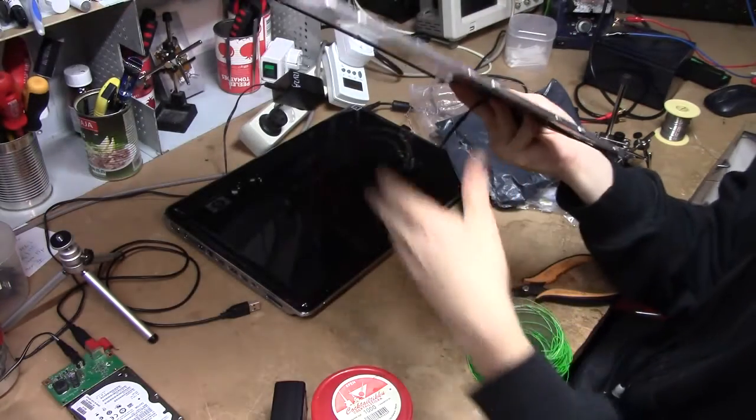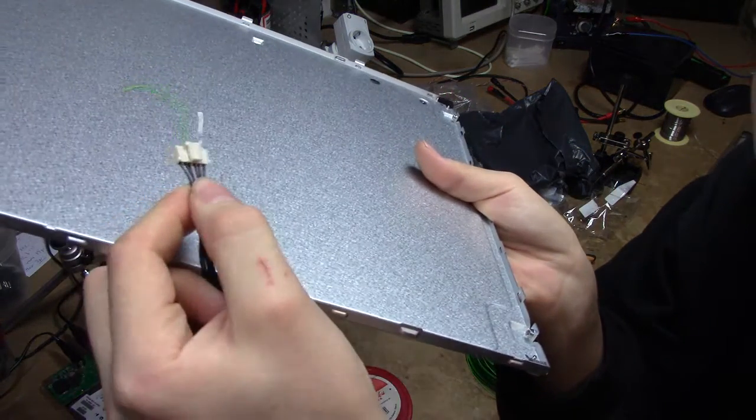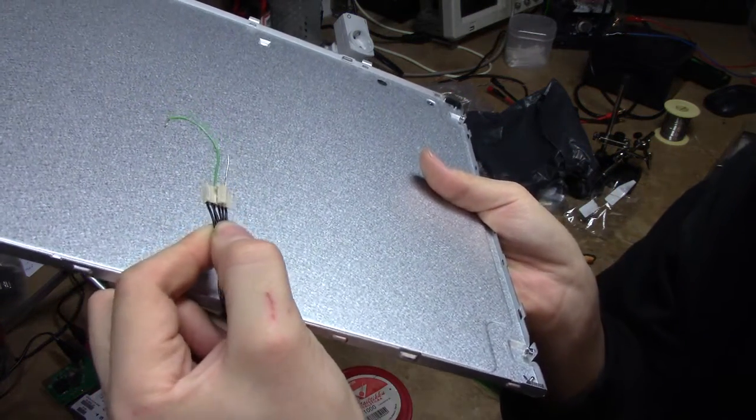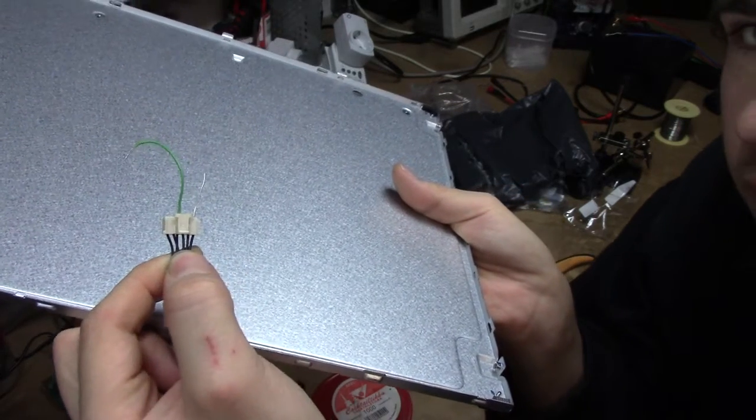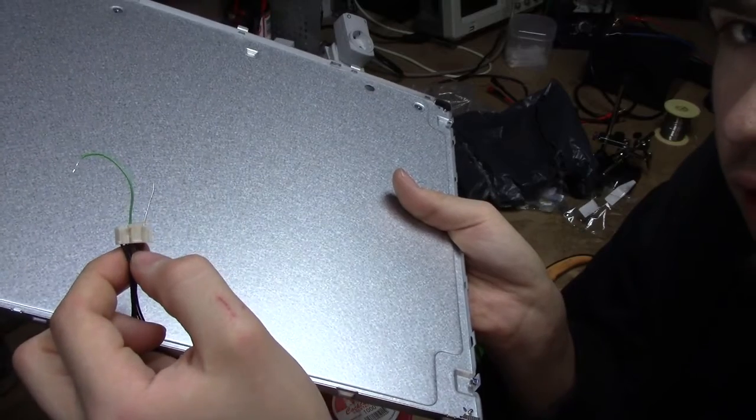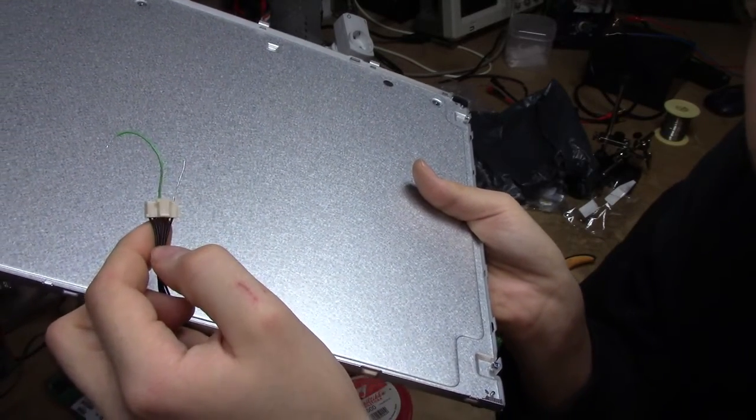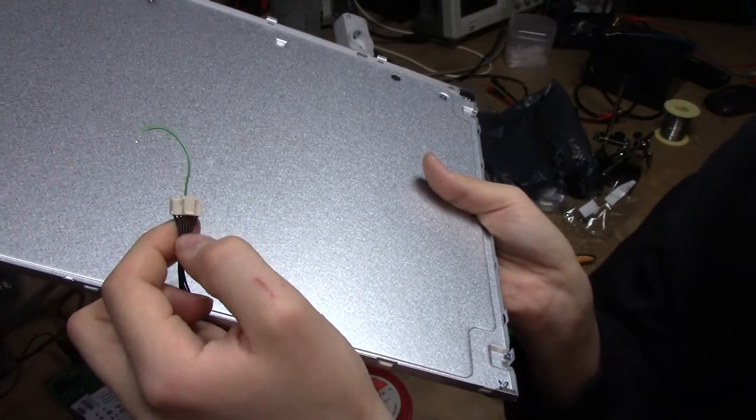This thing comes with a 6-pin connector, and I've verified that the two middle pins should be the positive feed, and I believe the two pairs of outer pins should be individual LED strings.